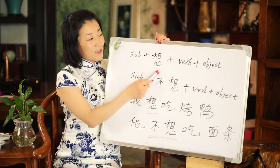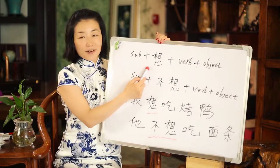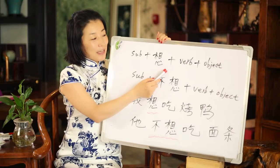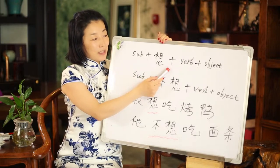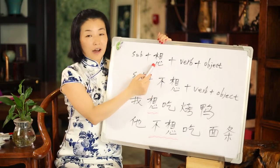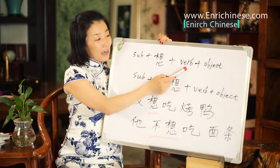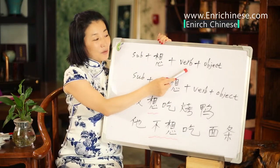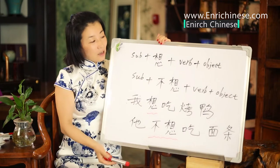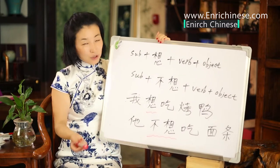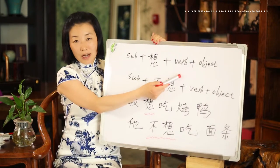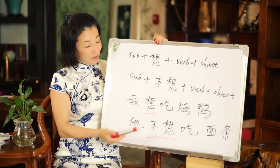Is 想 just 'think'? No. Here you can say 我想要, or you can omit 要 and say 我想, and then add a verb — the verb is the action. 我想要 do something means you would like to do something.